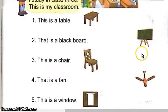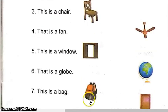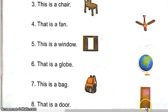This is a table. This is a blackboard. This is a chair. This is a fan. This is a window. This is a globe. This is a bag. This is a door.